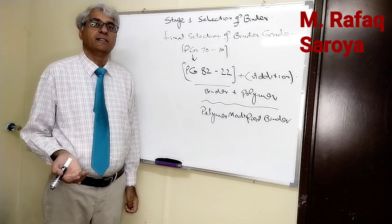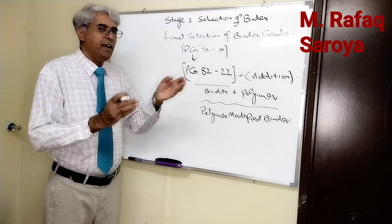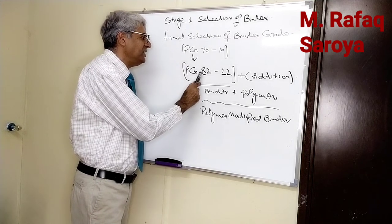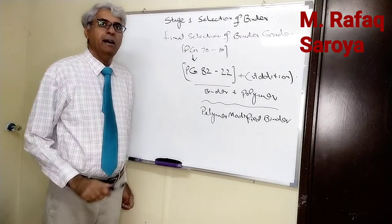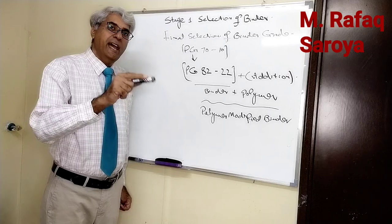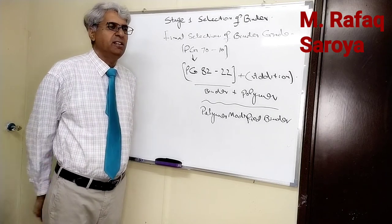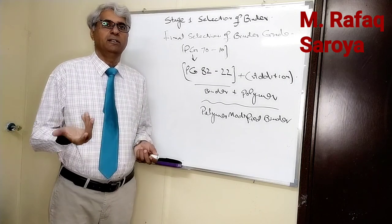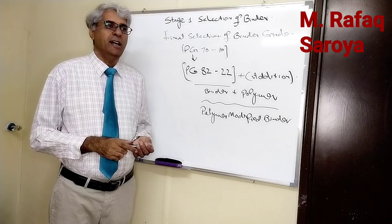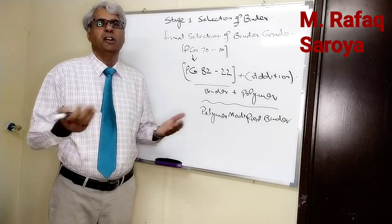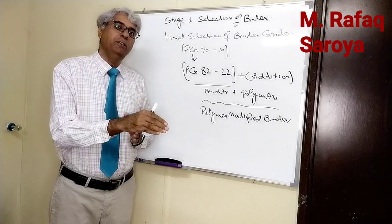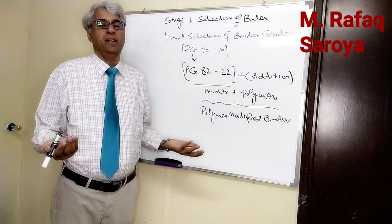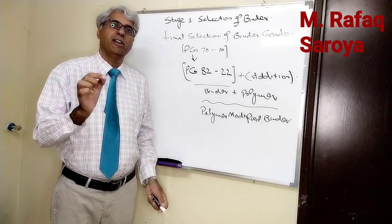At the end I can say that my final accepted grade is PG 82 negative 22, which has modification done with polymer. This polymer can be like tire rubber or it can be SPS or it can be other polymers. Whatever we are going to add, it is a polymer because polymer is an organic content.